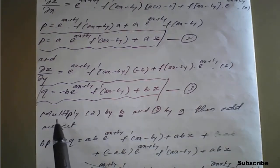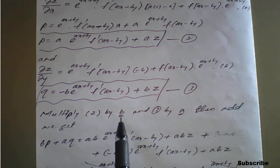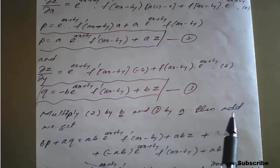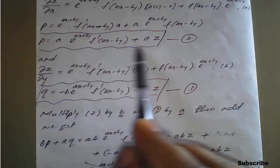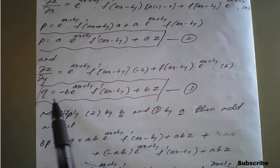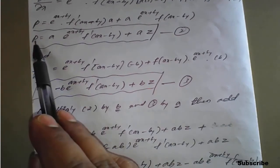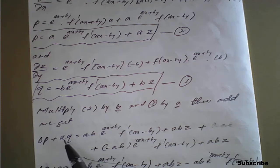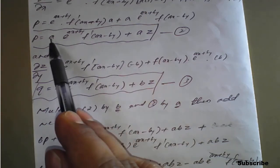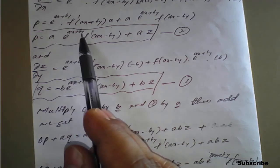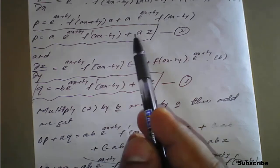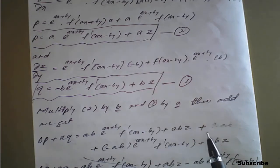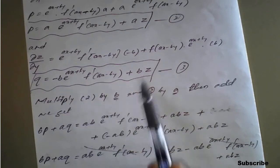To eliminate the f dash term, multiply equation two by b and equation three by a, then add. Multiplying equation two by b: left-hand side becomes b times p. Multiplying equation three by a: left-hand side becomes a times q. On the right-hand side, multiplying equation two by b gives ab times e raised to (ax + by) into f dash of (ax minus by) plus ab times z.